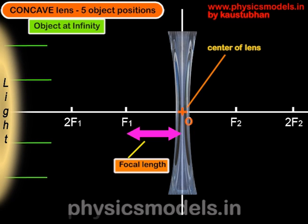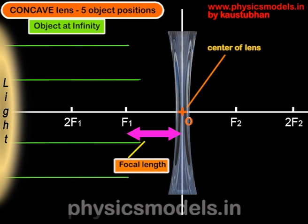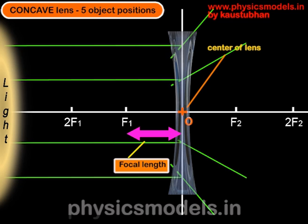The object is at infinity now. The green rays are coming in parallel to the principal axis and they will diverge, because the concave lens is also known as a diverging lens. You can see how they diverge after coming out from the lens after refraction. These rays will never meet on the right-hand side, so they have to be projected backwards and you can see the dotted lines all converging at F1. Therefore, F1 is the focal point for a concave lens.